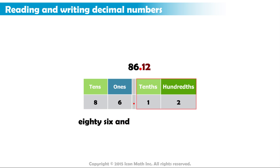Now, count the number of decimals. We have two decimals. So the denominator of the decimal fraction is 10 to the power 2, or 100. That gives us a decimal part of 12 hundredths. And the complete number is read as 86 and 12 hundredths.